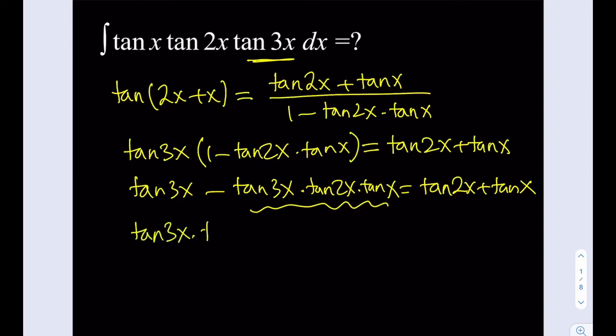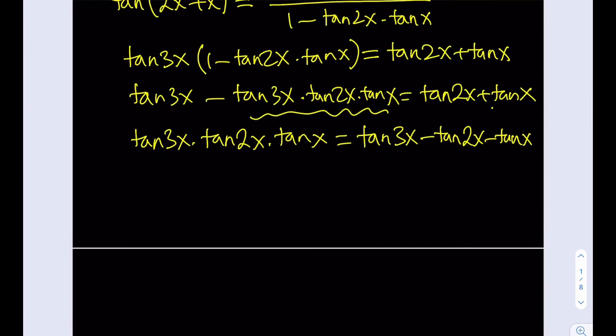Tangent 3x times tangent 2x times tangent x is going to equal, if I subtract this expression from tangent 3x, that's tangent 3x minus tangent 2x minus tangent x.